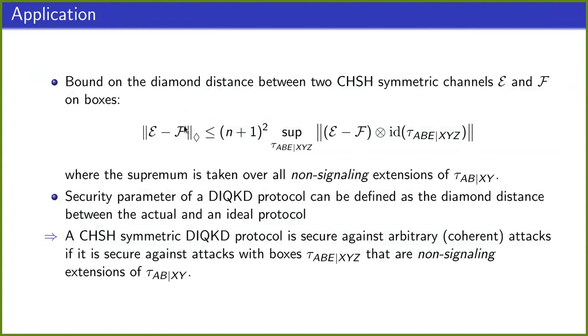And so our theorem implies that the diamond norm between E and F is upper bounded by the distinguishability of E and F by an attacker that is restricted to use non-signaling extensions of this fixed de Finetti box tau_abxy that we met in the previous theorem, which is the quantum box.